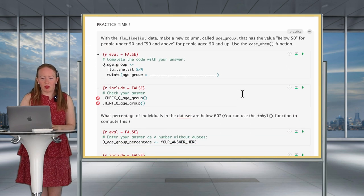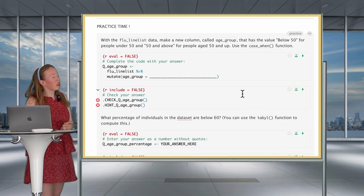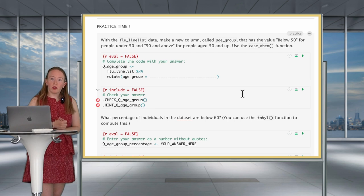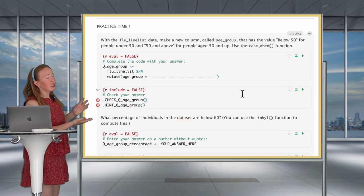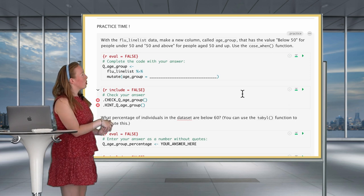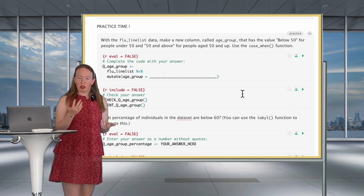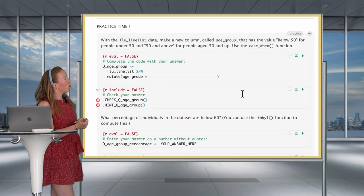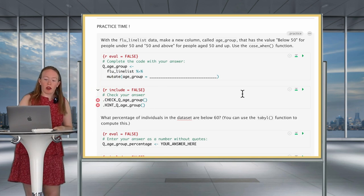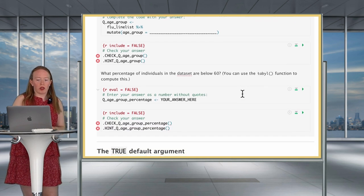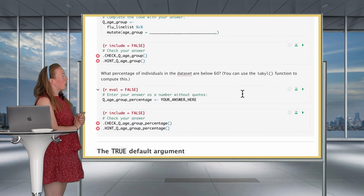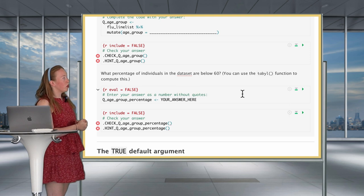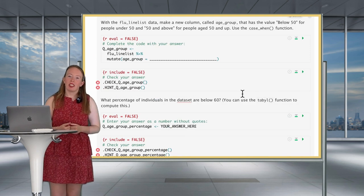It's now practice time — your first interaction with case_when. You're going to use the flu line list data and make a new column called age_group, defining a group below 50 and another 50 and above. A second question will ask what percentage of individuals are below 60, which will require using table.